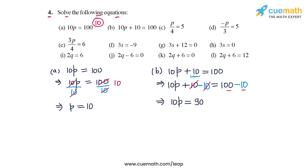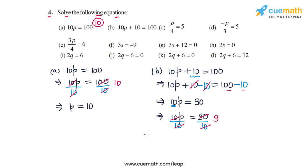We have still not separated out p, so we now divide by 10 on both sides to get rid of this 10. We have 10p equal to 90, dividing both LHS and RHS by 10. The 10s cancel out on the LHS and 90 by 10 is 9, so we obtain p equal to 9. This is the solution of the equation in part b.